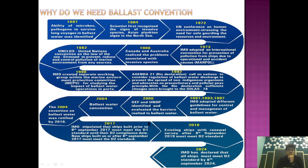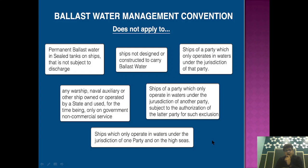After formulation in 2004, it took 13 years to get the convention ratified and enter into force. In 2017 it entered into force, and it was stated that all ships built after 8 September 2017 must comply with D2 standards. All ships, irrespective of their construction date, need to comply with the Ballast Water Convention by 2024. This is how the convention came into existence.